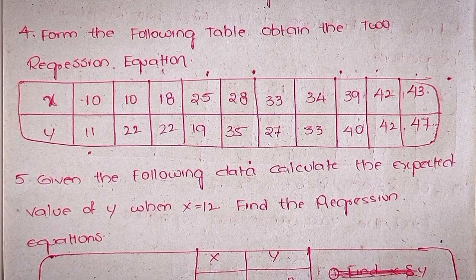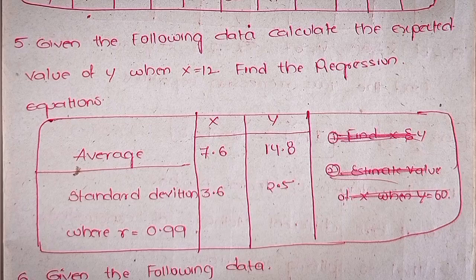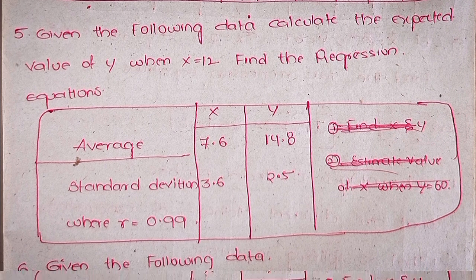Y values: 11, 22, 22, 19, 35, 27, 33, 40, 42, 47. Fifthly, given the following data, calculate the expected value of y when x = 12. Find the regression equation: average x = 7.6, y = 14.8. Deviation x = 3.6, y = 2.5, where r = 0.99.